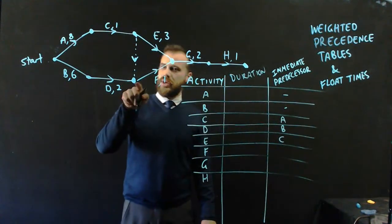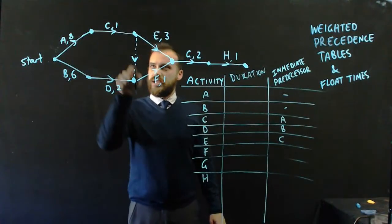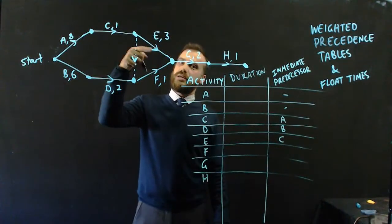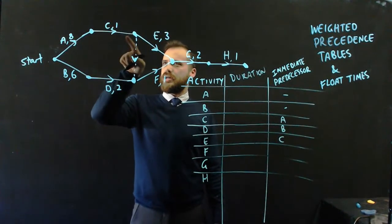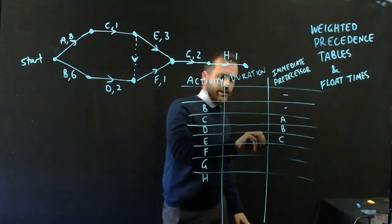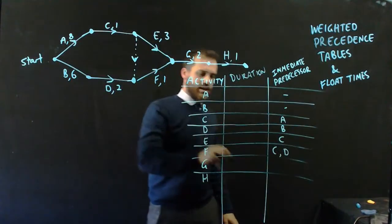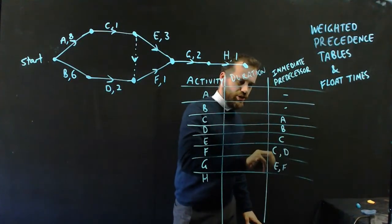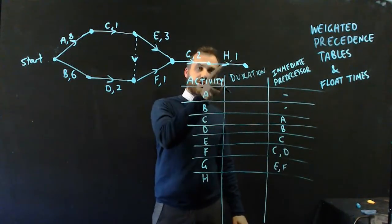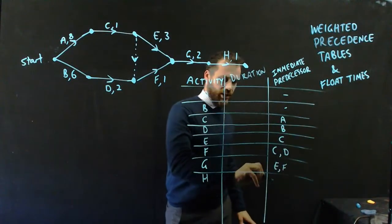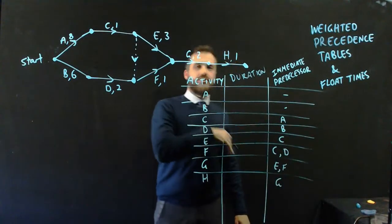E has an immediate predecessor of C. F, you need to be careful with, has an immediate predecessor of D, but the dummy activity also shows that it has a predecessor of C. So that's C and D. G has two predecessors, E and F, and H has a predecessor of G. And we're finished.